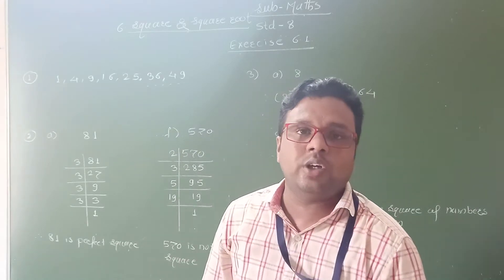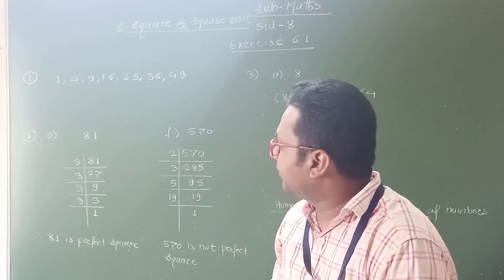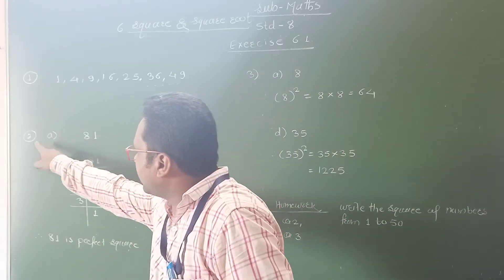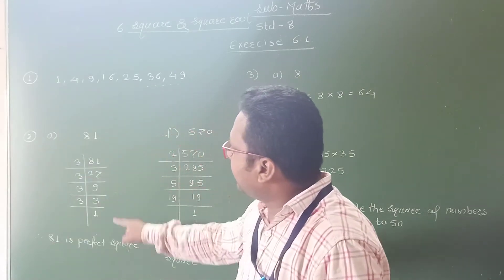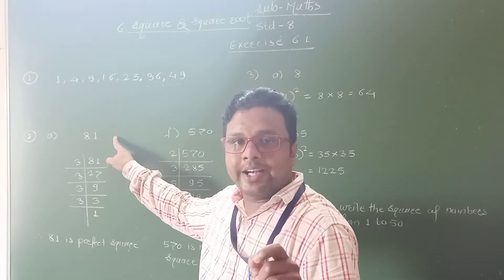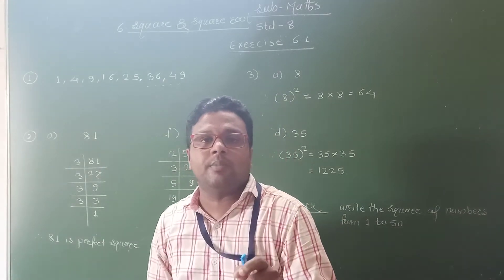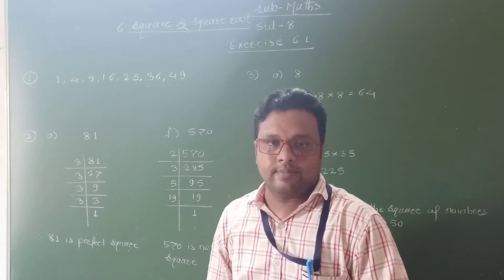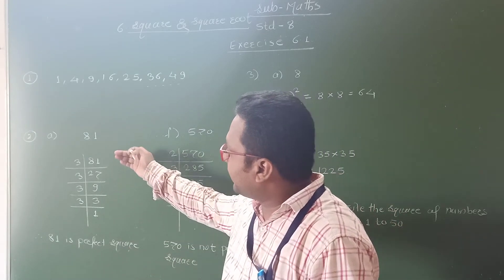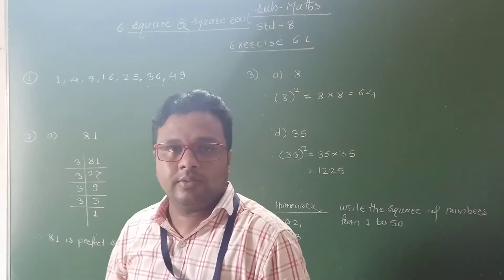For that, you have to find out the prime factors for the given number. Here I take example A from question number 2. The number given is 81. We have to identify whether 81 is a perfect square number or not. For that, we find out the prime factors.